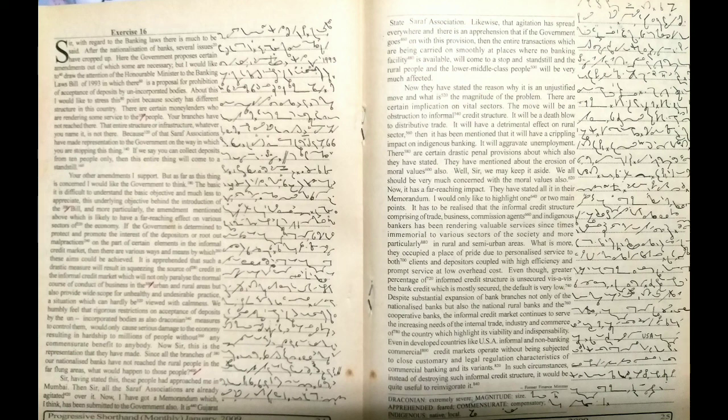I would only like to highlight one or two main points. It has to be realized that the informal credit structure comprising of trade, business, commission agents and indigenous bankers has been rendering valuable services since times immemorial to various sectors of the society, and more particularly in rural and semi-urban areas. What is more, they occupied a place of pride due to personalized service to both clients and depositors, coupled with high efficiency and prompt service at low overhead cost.